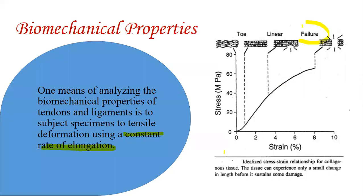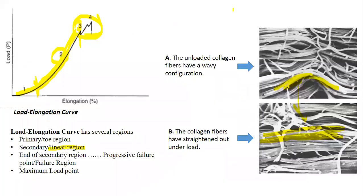Failure occurs and the tendon or ligament on which stress was applied undergoes rupture. At the end of the linear region, we have the ultimate tensile strength — the maximum load that the tendon and ligament can bear.